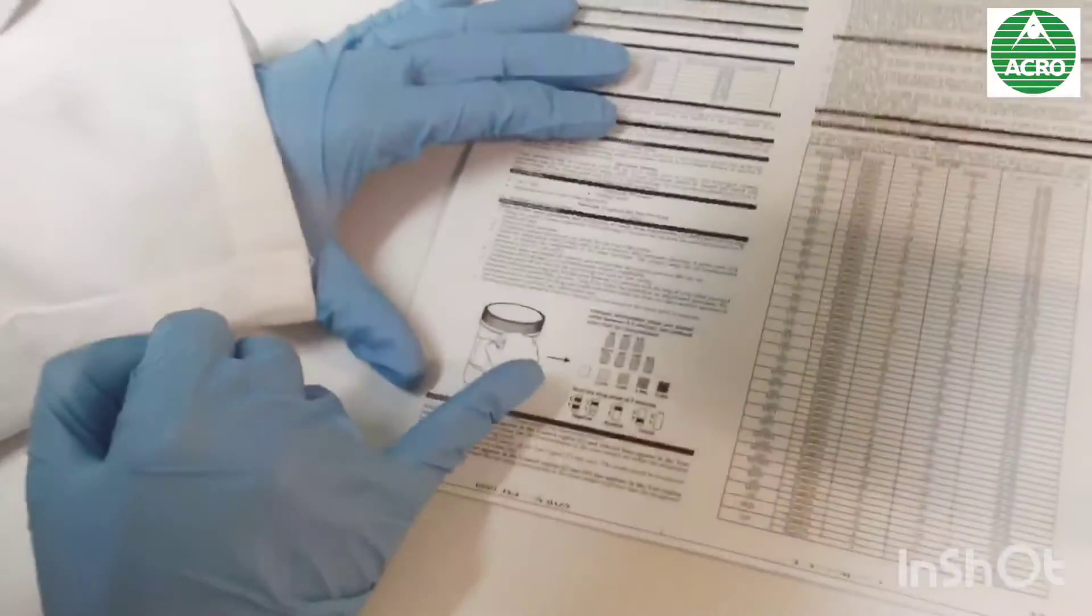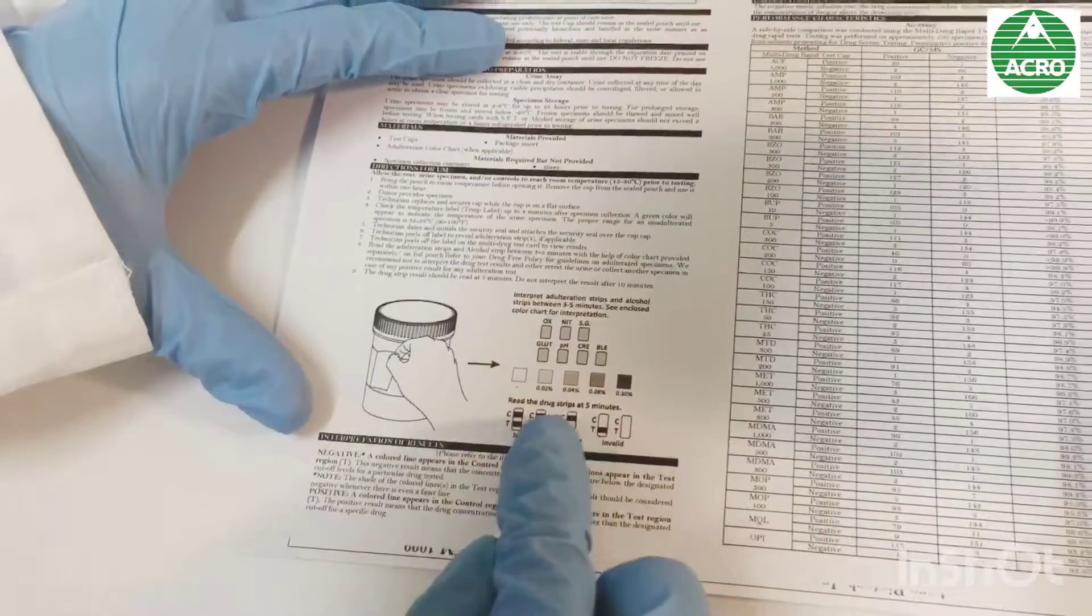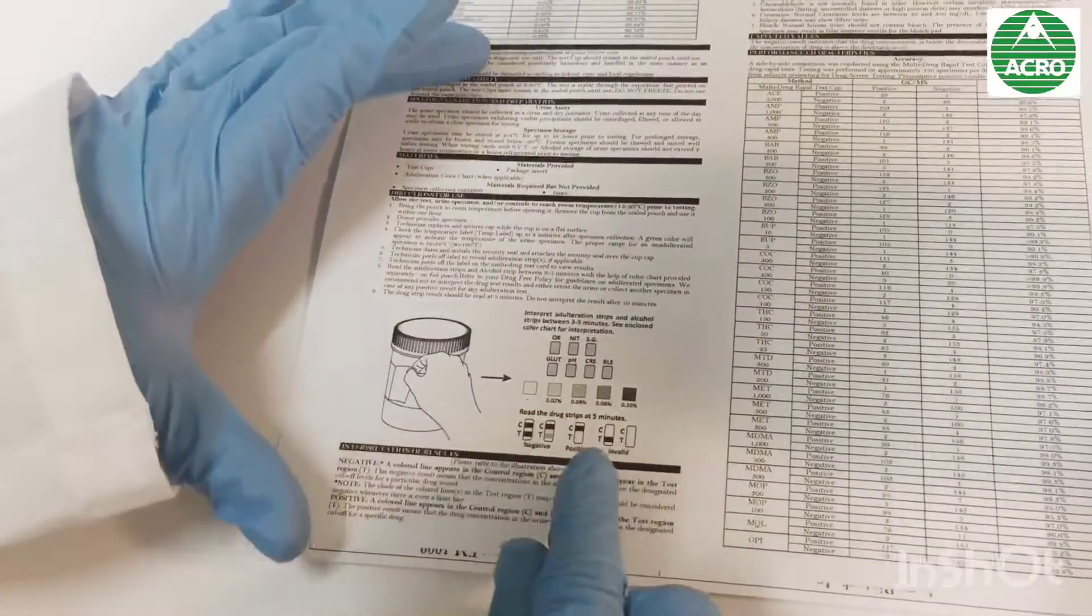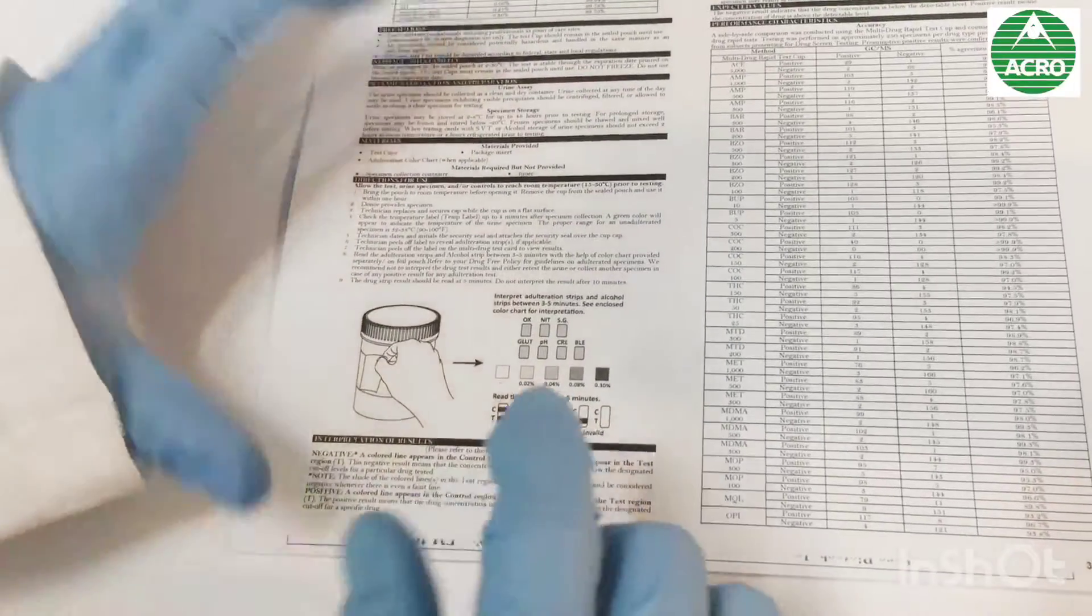The results, if we have two lines, that means it's negative. If we have only the control line, that means it's positive. And if we have only the testing line or no line, that means it's not valid.